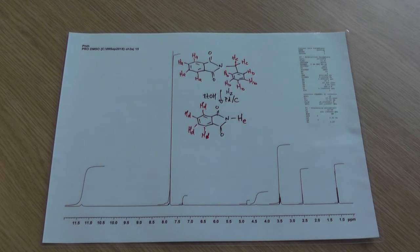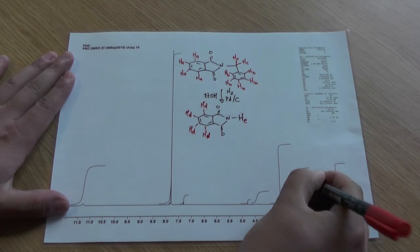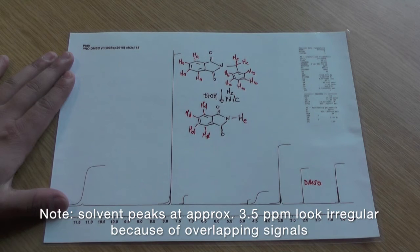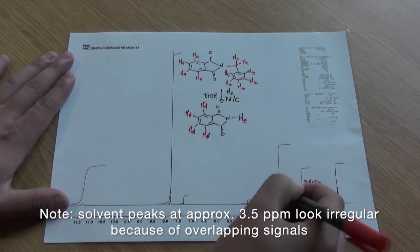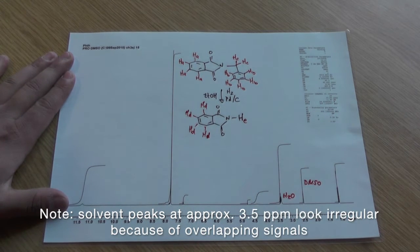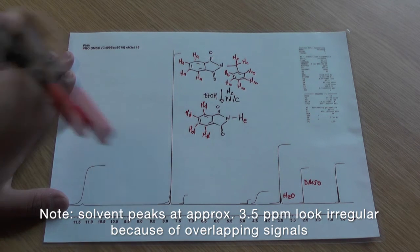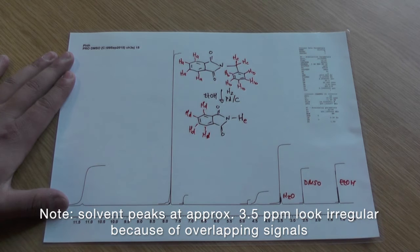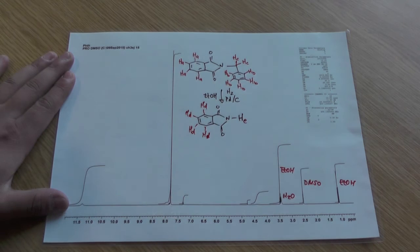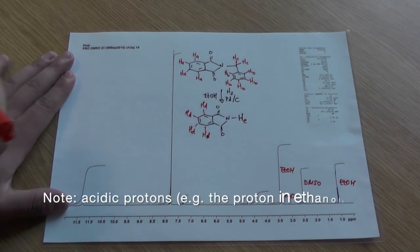Looking at our spectrum, we can rule out the peak corresponding to DMSO at 2.5, the peak corresponding to water around 3.3, and our three ethanol peaks: the first a triplet at around 1, a quartet around 3.4, and a singlet around 4.5.